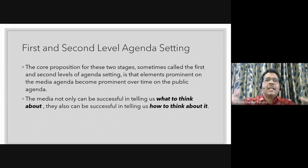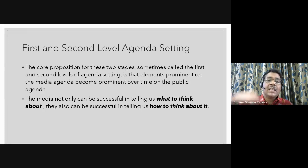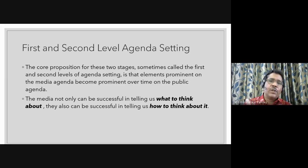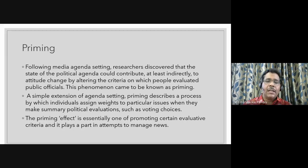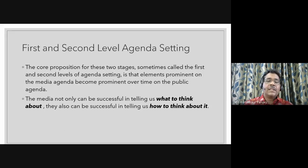The core proposition is that at the first level, media tells us what to think about — it signals that this topic is important, by giving more prominence to stories through headlines or coverage. The second level of agenda setting goes further and tells us what part of a topic is more important. For example, regarding COVID-19, they may not only say it is important, but also direct us toward talking about vaccination rather than other aspects. That is second-level agenda setting.